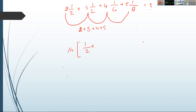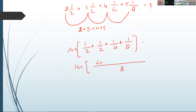Then write the fractional part: 1/2 plus 1/2 plus 1/4 plus 1/8. The LCM of 2, 4, and 8 is 8. So this becomes 4/8 plus 4/8 plus 2/8 plus 1/8, which equals 11/8. So the result is 14 plus 11/8, which equals 15 and 3/8. You can first solve the whole parts by adding them, then solve the fractional part — it will be much easier and faster.